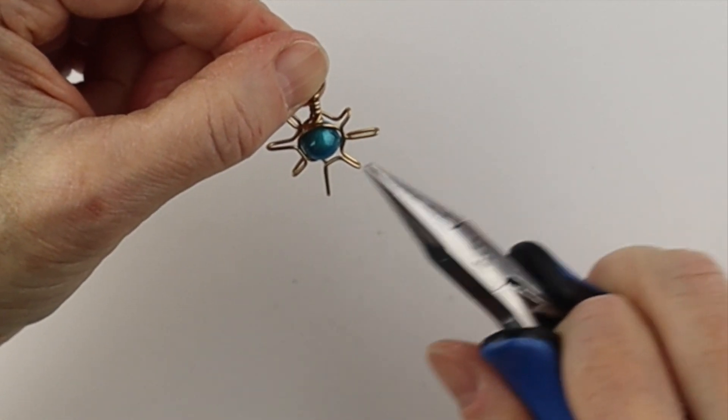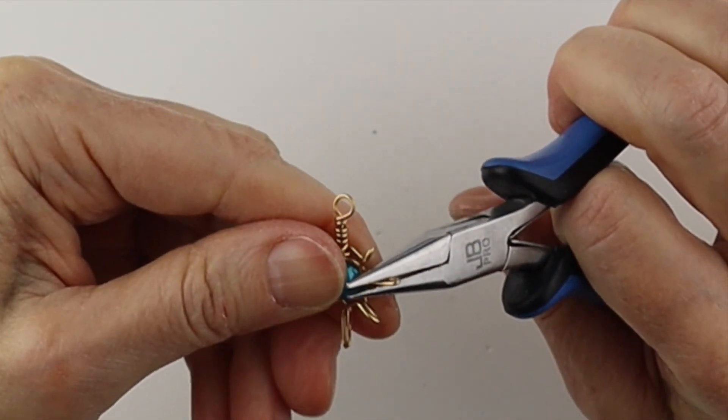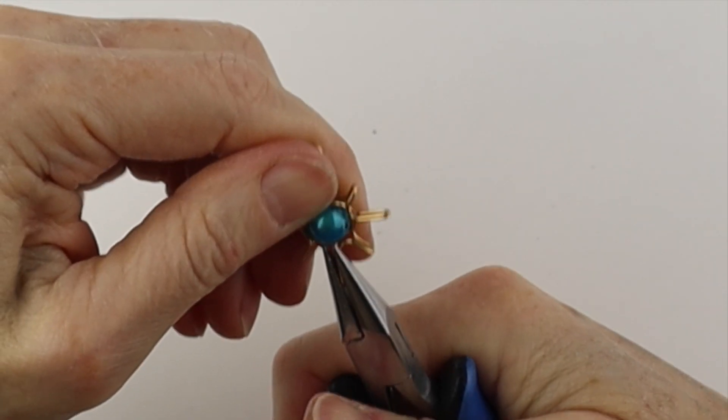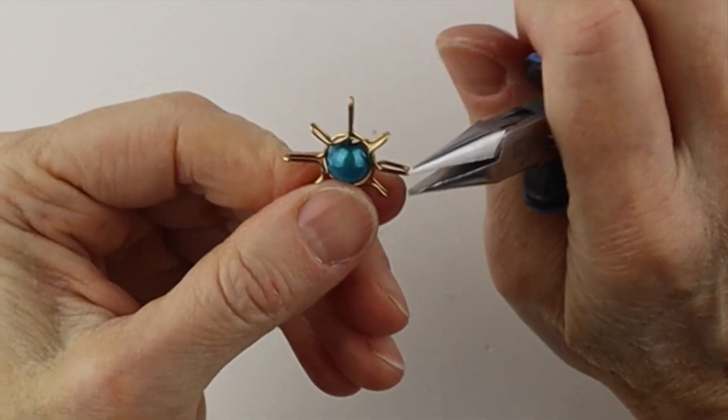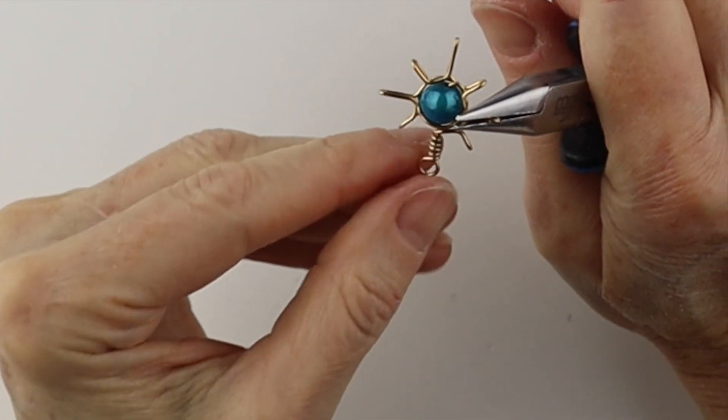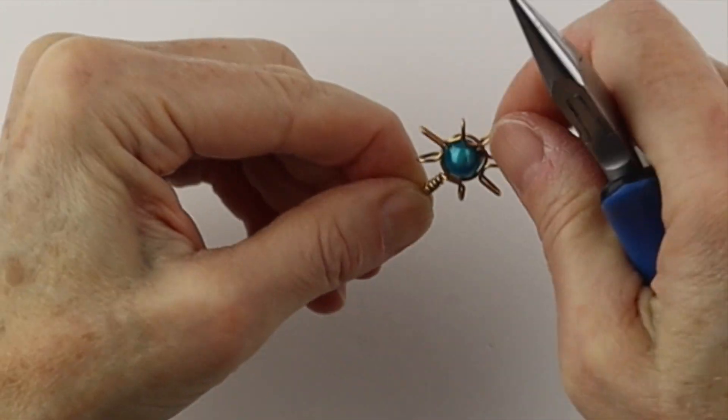And then from here, if your ends are like sticking up or a little crooked, just hold it and straighten them out. Because you want this to be a straight line, this to be a straight line, that is straight and that's straight.